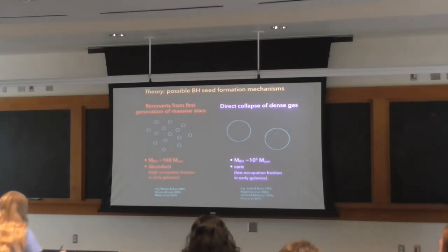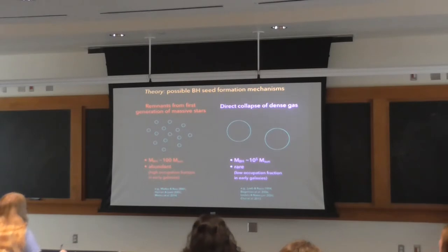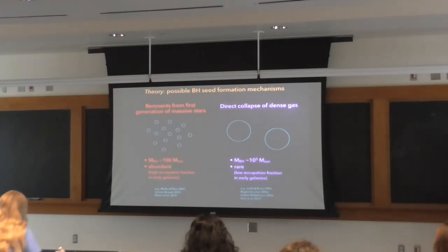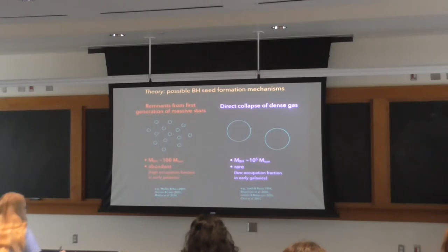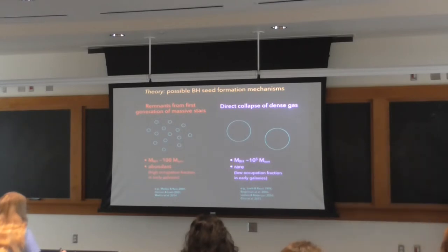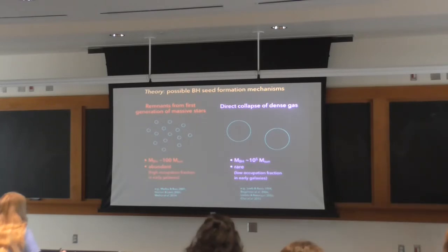Alternatively, black hole seeds may have been significantly more massive, formed from the rapid inflow and direct collapse of very dense gas in the early universe, leaving seeds with masses on the order of 10^5 solar masses. The appeal of these more massive seeds is that they help ease the problem of assembling billion-solar-mass black holes in the very early universe. However, special conditions are necessary to prevent the gas from fragmenting and forming stars, so these massive seeds are expected to be relatively rare, with a low occupation fraction in early low-mass galaxies.